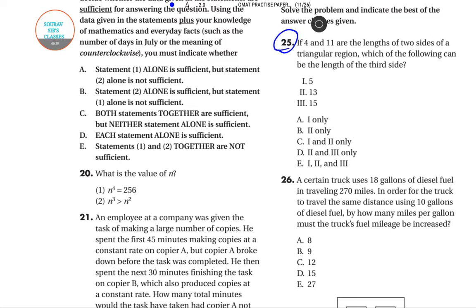The question says that if 4 and 11 are the lengths of two sides of a triangular region, which of the following can be the length of the third side? There are three options provided, and we need to choose from five different permutation and combinations. We'll first analyze it and then see which one is correct.